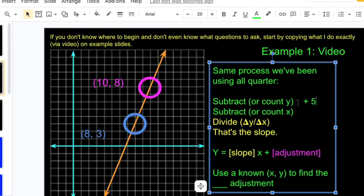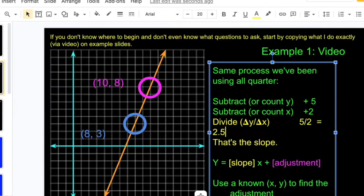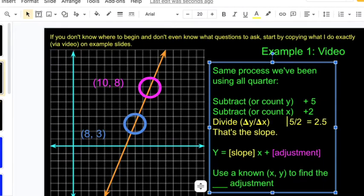Subtract or count in the x direction. The distance from eight to ten is plus two. Divide those two numbers. Change of y divided by change of x, that's five over two. Or if I simplify that or turn it into a decimal that would be two point five. Five divided by two is two and a half. That is our slope.